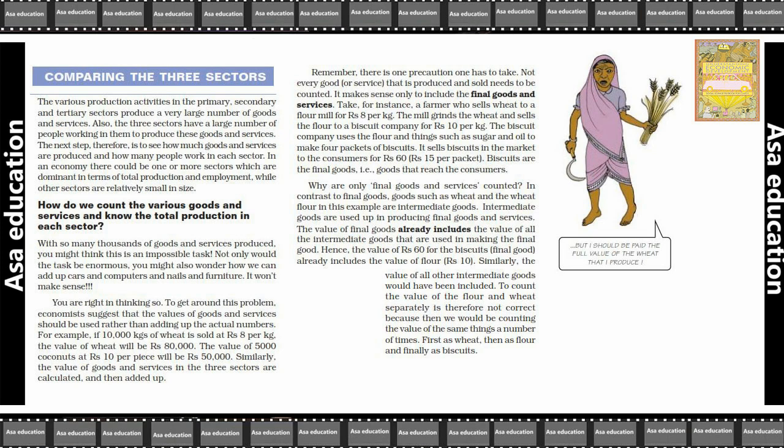To count the value of the flour and wheat separately is therefore not correct, because then we would be counting the value of the same things multiple times. Agar hum floor ki ya wheat ki value alag-alag count karein, toh woh sahih nahi hoga — kyunki usse hume har ek same cheez ke liye baar-baar counting karni padegi: pehle wheat ki value, then flour ki, and then finally biscuits ki.